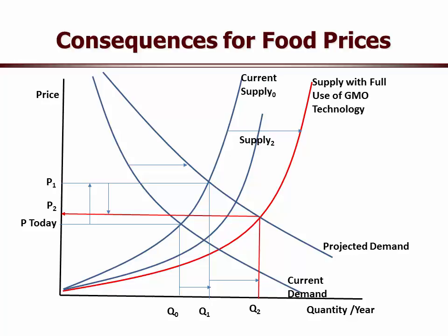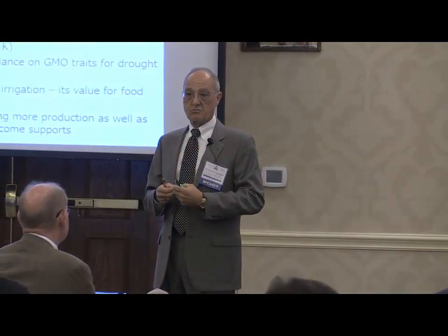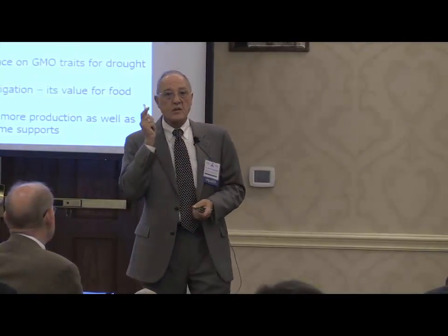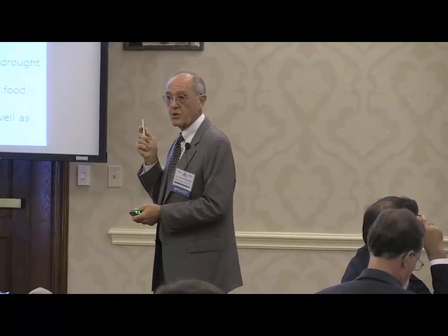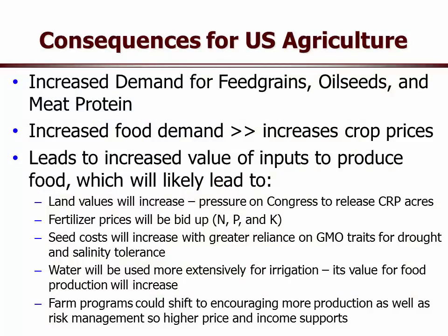Consequences for US agriculture: we're going to see increased demand for feed grains, oilseeds, and meat protein, because increased incomes around the world demand protein. We're going to see increased crop prices, leading to an increased value of inputs used to produce food. First, land prices are going to increase — so if you don't own a farm today, go out and buy one, it's going to be a good investment. There's also going to be pressure on Congress to release the CRP acreage.